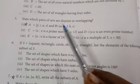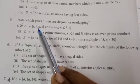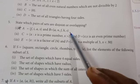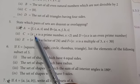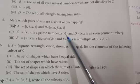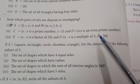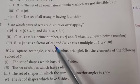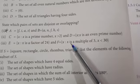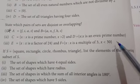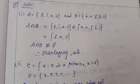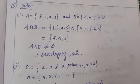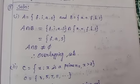Students, now fifth question. State which pair of sets are disjoint or overlapping. First, we recall disjoint set and overlapping set. Disjoint set means two sets have no common element. Two sets having at least one common element is called an overlapping set.